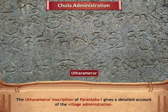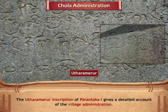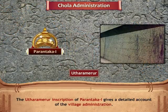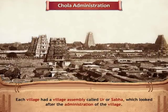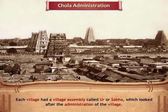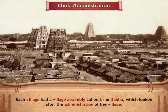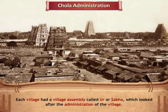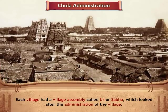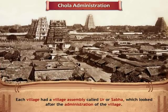The Uthara Merur inscription of Parantaka I gives a detailed account of the village administration. Each village had a village assembly called Ur or Sabha, which looked after the administration of the village.